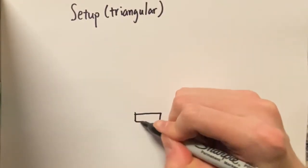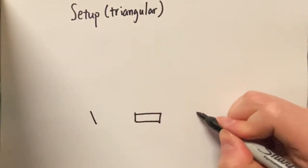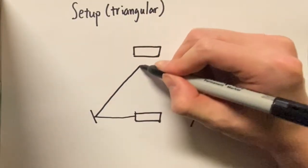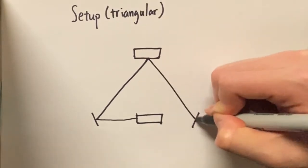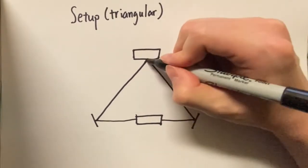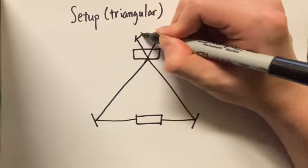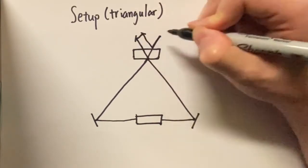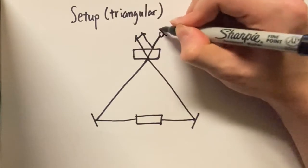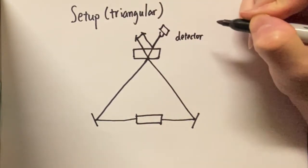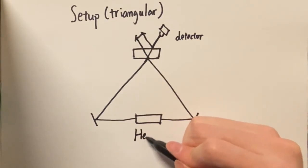Nowadays, Sagnac gyroscope either use a coil or fiber optic cable to make the path length very long, can be several kilometers, or simply use a ring laser cavity. Here is the sketch showing the latter technique. We need to use a highly stable monochromatic laser source with a closed path. Usually people use helium neon laser since it is the most common type.